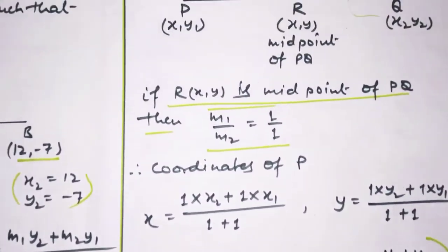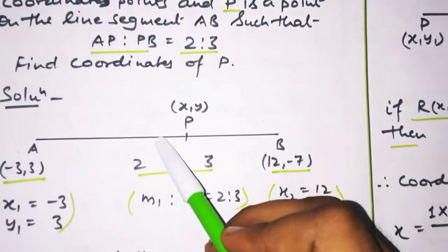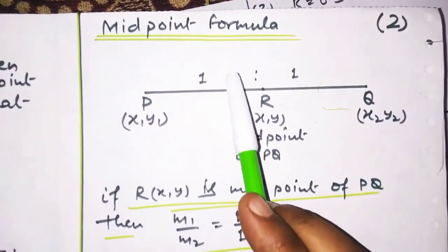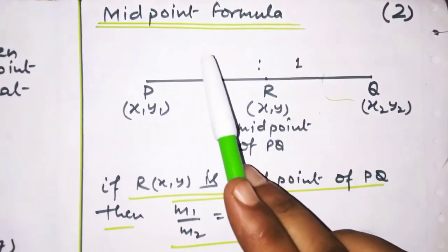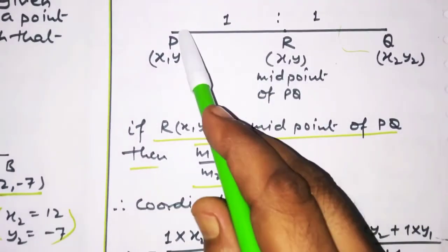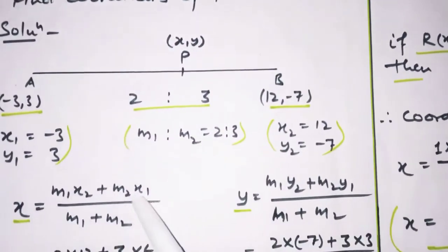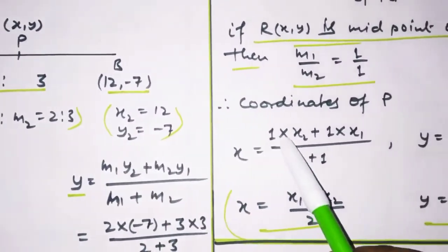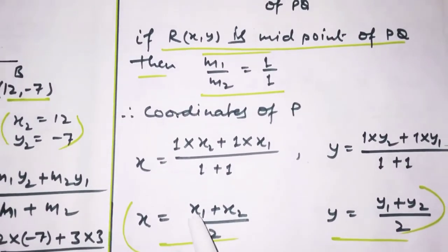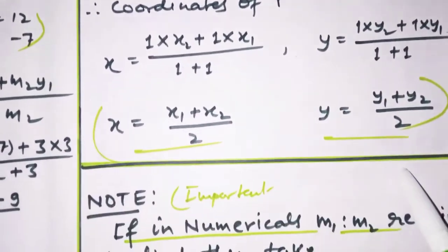Iske baad hum baat karenge midpoint ki. Agar yahi beech ka jo ratio hai, yeh point mid mein ho jaye, to ratio 1:1 ho jata hai. R aapka mid mein aa gaya hai to M1 ratio M2 kitna ho jata hai? 1:1. Isi formula mein M1 ki jagah 1 ho jayega, M2 ki jagah 1 ho jayega. To midpoint formula: dono coordinates ko add karke 2 se divide kar denge — yaani ((x1+x2)/2, (y1+y2)/2).